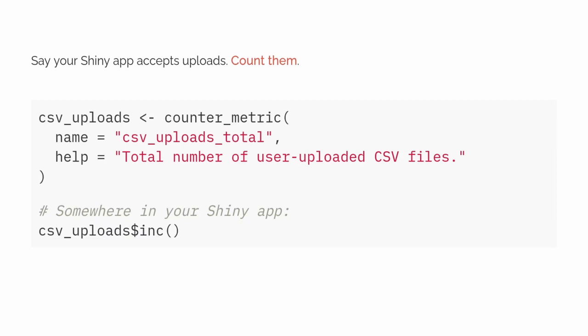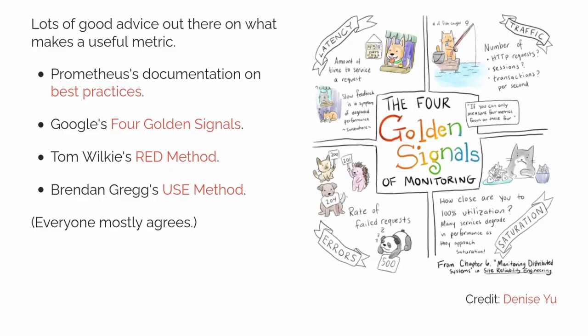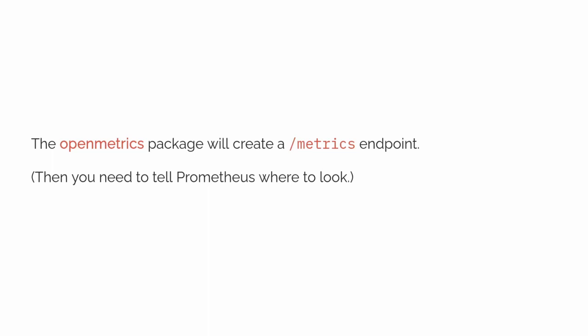Somewhere buried in your reactives in your Shiny application, you want to increment the counter when a user actually uploads a CSV file. There's lots of good advice out there on how to design and implement metrics for your applications. Because Prometheus uses a poll-based model, OpenMetrics will add a /metrics endpoint to your R application. You'll also need to tell Prometheus where to find your application, but that's a bit outside the scope of this talk. The /metrics endpoint is just a regular HTTP endpoint, so we can query it using regular R tools like the httr package.